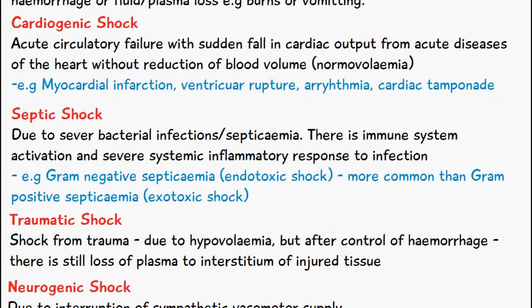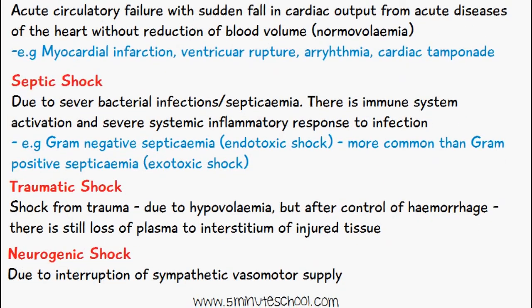Traumatic shock occurs from trauma due to hypovolemia, but after control of the hemorrhage there is still loss of plasma to the interstitium of the injured tissue. Lastly, neurogenic shock is due to the interruption of sympathetic vasomotor supply. That's all for today's video — thank you very much for watching.